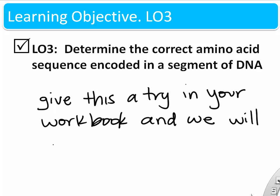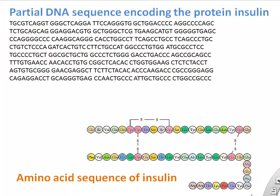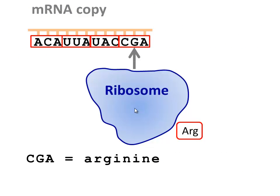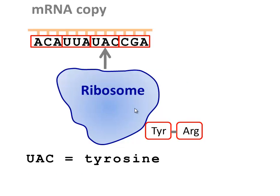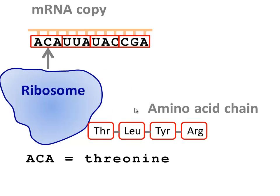Learning objective three is to determine the correct amino acid sequence encoded in a segment of DNA. You're basically going to do what we just did, but with specific sequences of DNA from the workbook. Remember: when you create an mRNA you use the template strand of DNA, and once you've made your mRNA, you read the nucleotides in groups of three and go get the right amino acid depending on the nucleotide sequence. The ribosome reads the mRNA in groups of three and goes and gets the correct amino acid depending on which three nucleotides it reads.